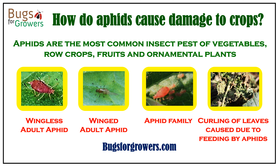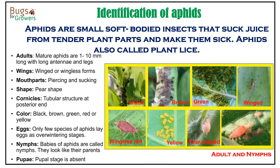As you know, aphids are the most common insect pest of many vegetables, row crops, fruits, and ornamental plants. Aphids are small, soft-bodied insects, about 1 to 10 mm long and pear-shaped. They have long antennae, legs, and piercing and sucking types of mouth parts.